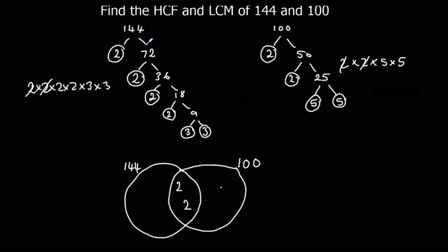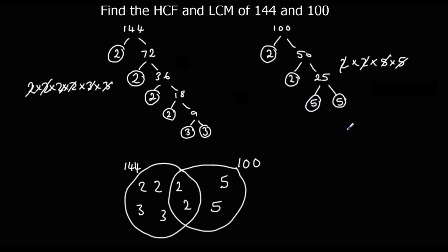They've both got 2 and 2, which goes in the middle. Now 144 has also got 2, 2, 3, and 3 remaining on its side. And 100 has got 5 and 5 on its side. Now we can work out the highest common factor — the common ones in the middle. What's common to them both is 2 times 2, so the highest common factor is 4.